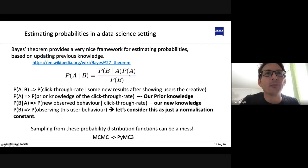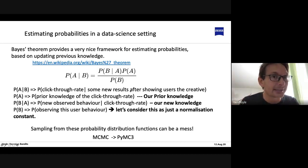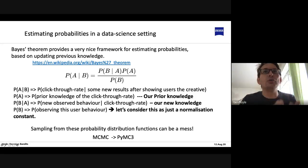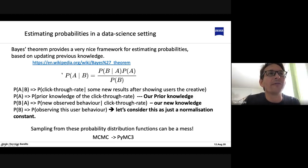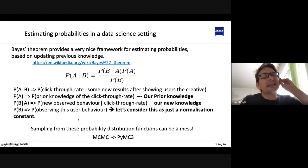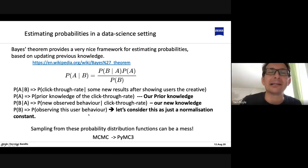P(A) here is our prior knowledge — what we know about the system before we start, which might be nothing, but we can still encode that nicely using Bayes' theorem. Then P(B|A) is our new knowledge that we're adding to the system. This allows us to update our knowledge of the probability of the click-through rate P(A|B) based on the formula. The probability P(B) is a technical detail we can consider as a normalization constant.